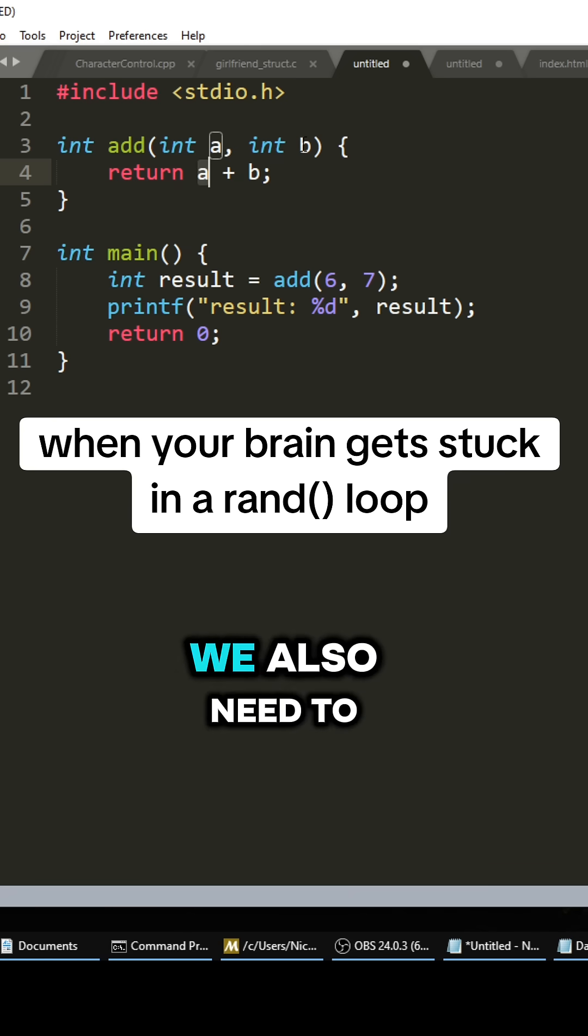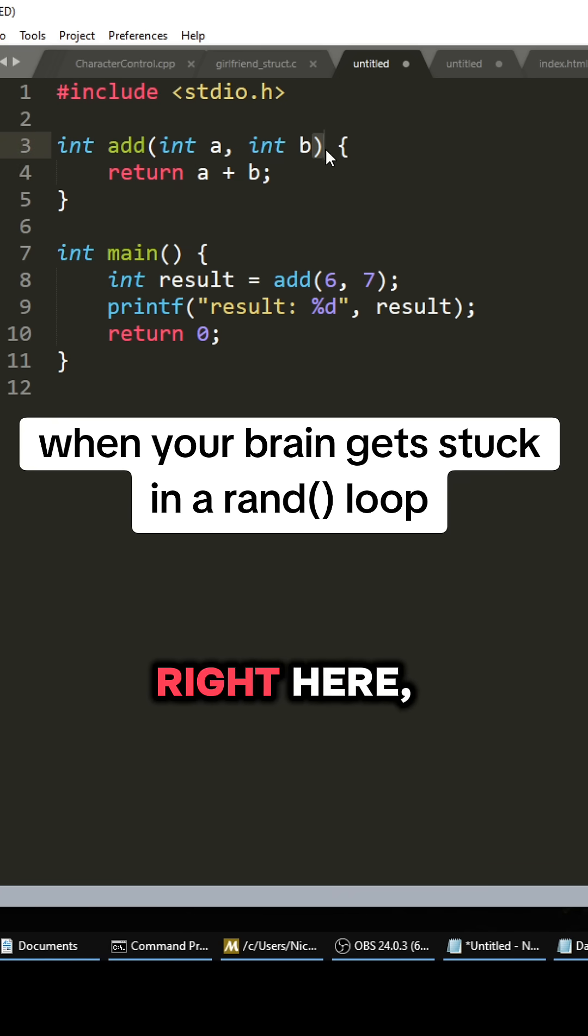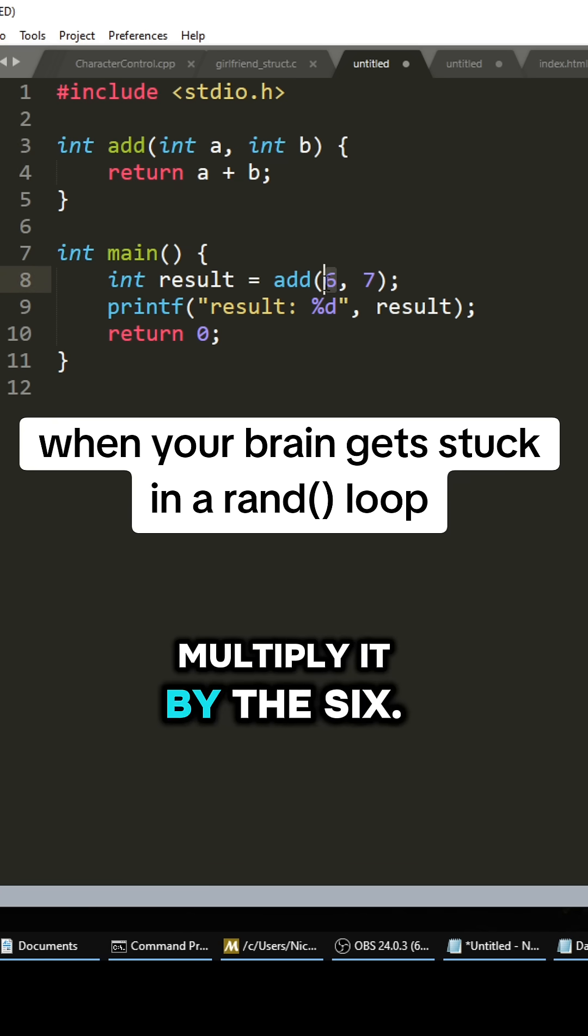But we also need to get the right parentheses right here, and we need to multiply it by the six. And then we're going to use this e right here, and we're also going to return that by b.